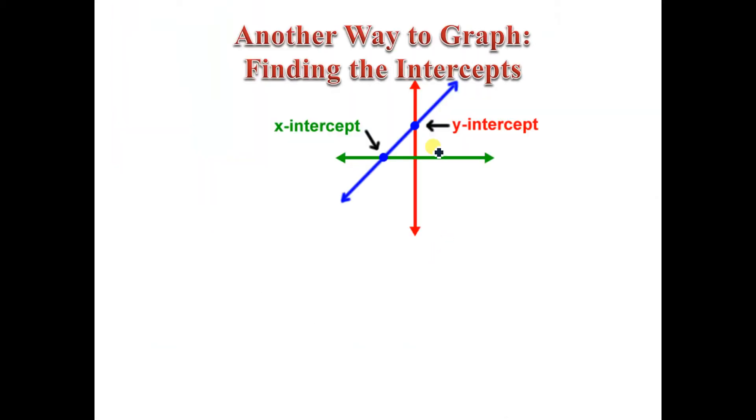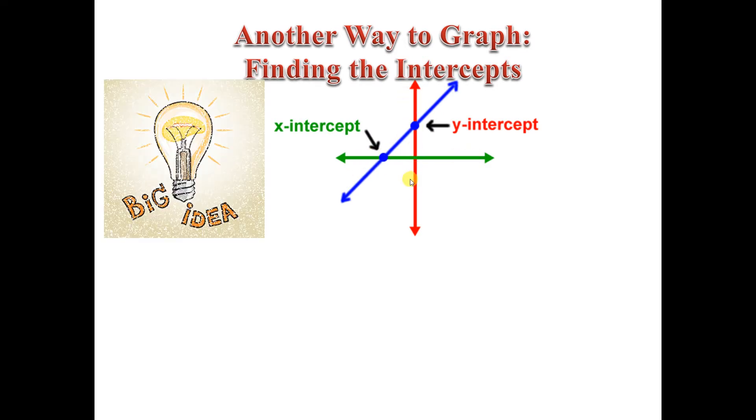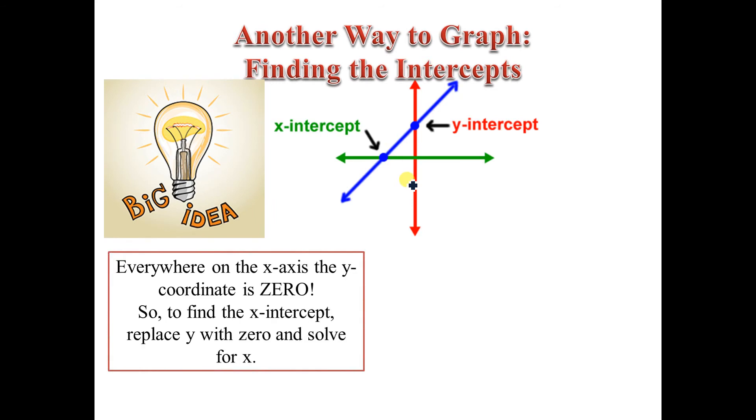Now another way, and this is perhaps my favorite way to graph a linear equation, is by finding the intercepts. So the intercepts are, well there are two of them, an x-intercept and a y. And the x-intercept is where the graph crosses the x-axis. The y-intercept is where the graph crosses the y-axis. So here's the big idea here, and this is how we're going to figure out what the x and y-intercepts are.